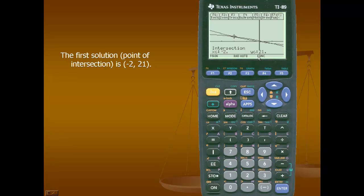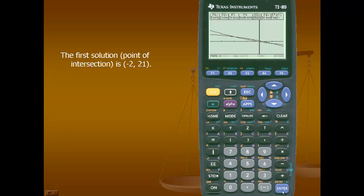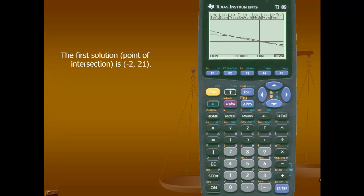To find the second point of intersection, we'll simply repeat the process. I'll press F5, scroll down to number 5, and press enter. I'll move the bullseye toward the second point of intersection. It recognizes the first curve — I'll press enter. It recognizes the second curve — I'll press enter. To set a lower bound, I'll move my bullseye to the left of the intersection point and press enter. For the upper bound, I'll move my bullseye to the right and press enter. The second point of intersection is at 1 comma negative 9.